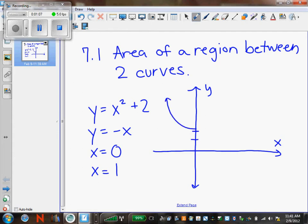Every one of these problems, I want to see a picture drawn. So, x squared plus 2 is a parabola shifted up to, y equals negative x is a line slanted with the slope of negative 1, x equals 0, vertical line, x equals 1, vertical line.